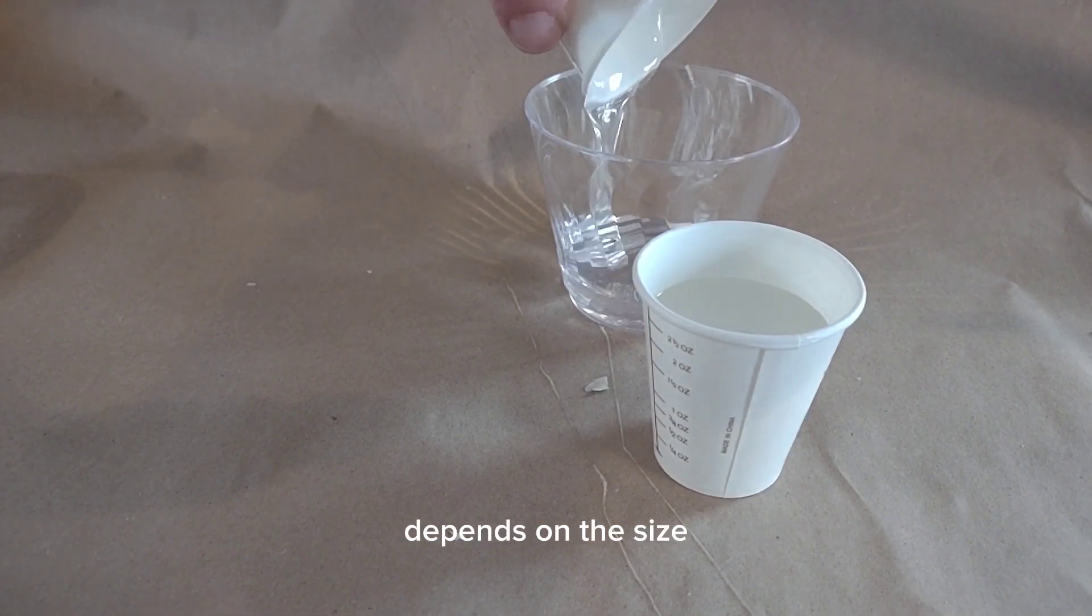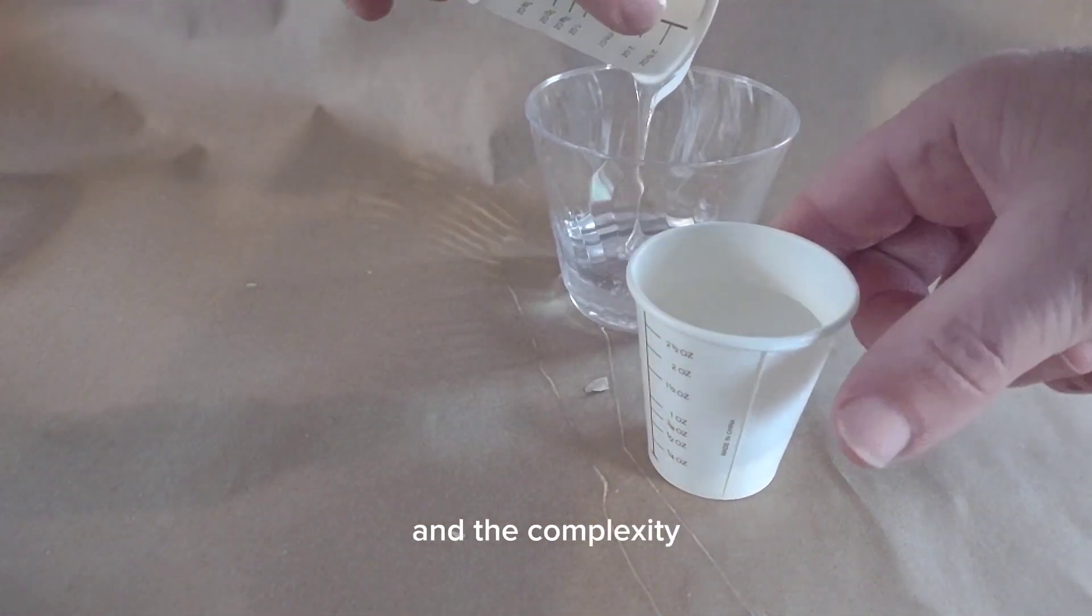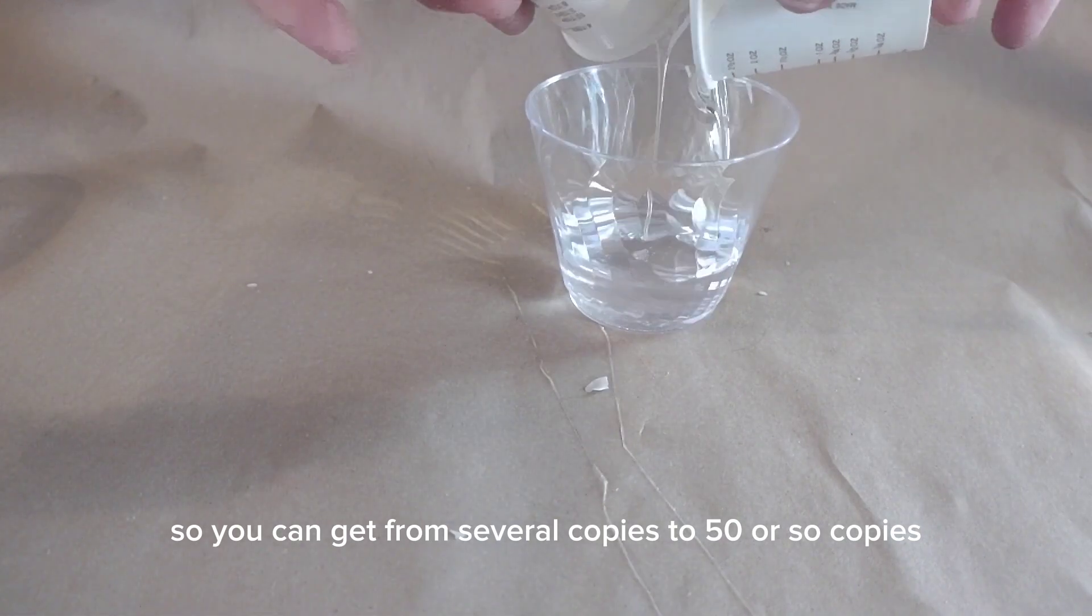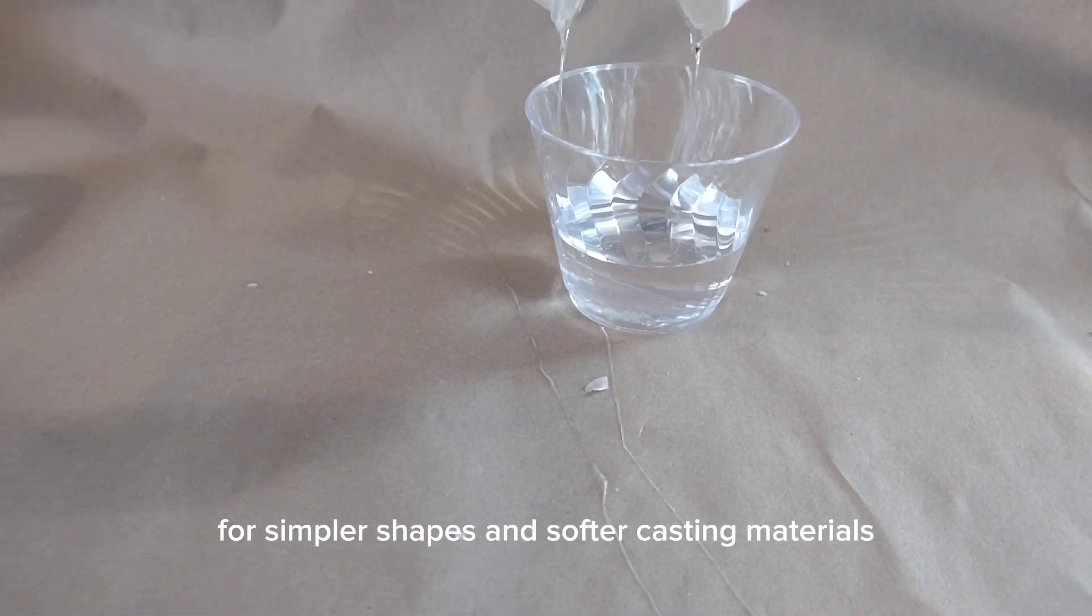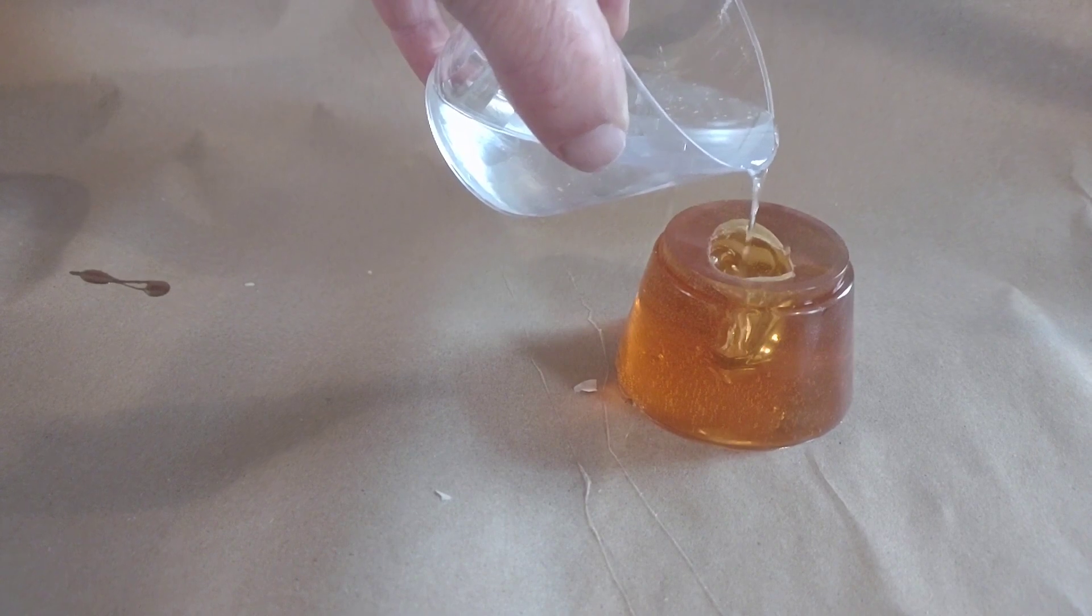The number of copies you can get from a mold depends on the size, the temperatures of the casting materials, and the complexity. You can get from several copies to 50 or so copies for simpler shapes and softer casting materials.